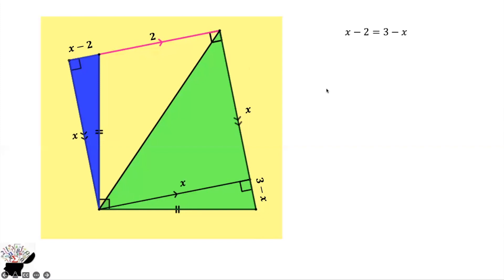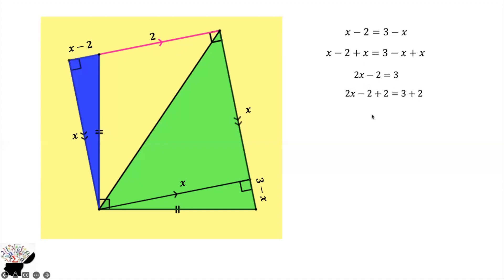Since they are congruent, x minus 2 should equal 3 minus x. We add x to both sides: x minus x is 0, and x plus x is 2x, giving us 2x minus 2 equals 3. Then we add 2 to both sides: minus 2 plus 2 is 0, and 3 plus 2 is 5. So 2x equals 5, and x equals 5 over 2.